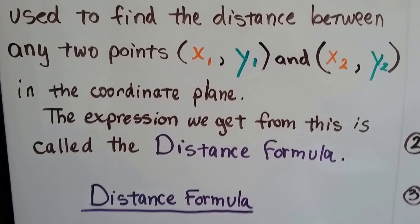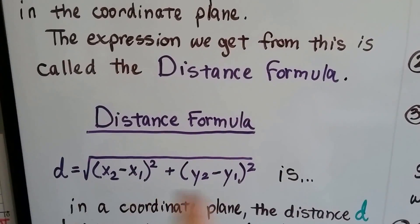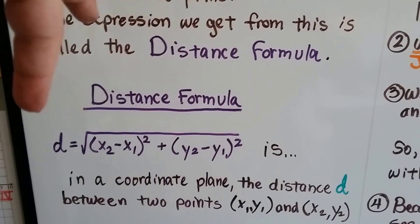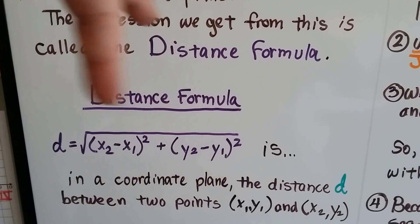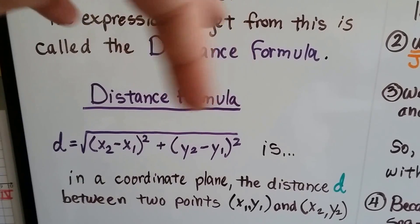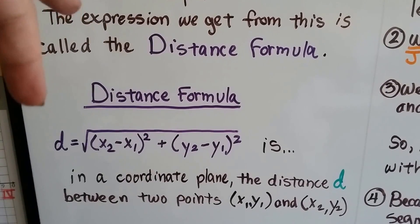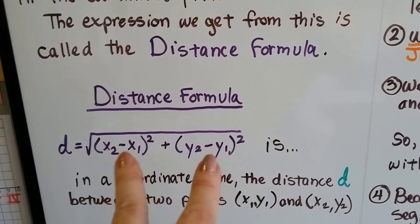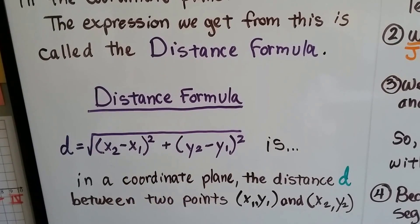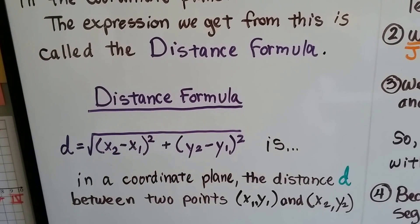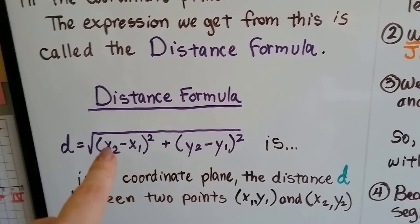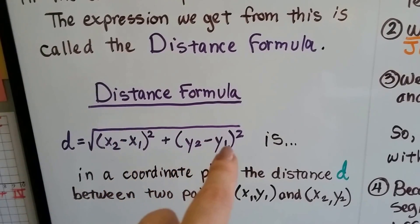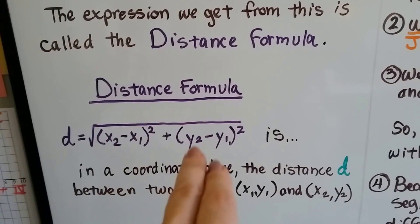The expression we get from this is called the distance formula, and this is what it looks like right here. This is the distance formula. This right here is in a coordinate plane, and the distance d between two points x1, y1 and x2, y2. See that? They put x2 minus x1 squared plus y2 minus y1 squared. See how they put the x's together and they put the y's together?